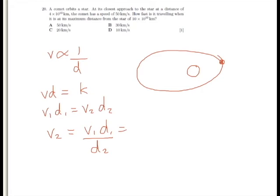Where v1 is 50 kilometers per second. We don't need to worry about converting units here because we're working with ratios, all the units will cancel out. So, we've got times 4 times 10 to the power of 10 kilometers, divided by 10 times 10 to the power of 10.